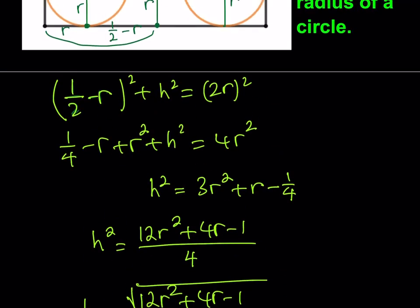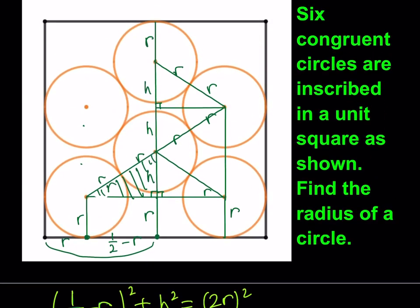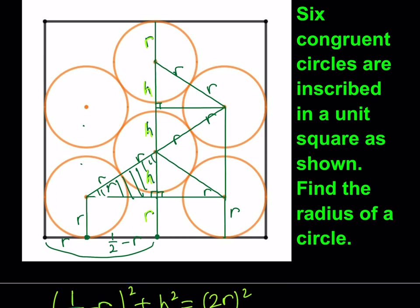How are H and R related in a different way? Well, if you consider the height of the square, which is also a side length, right? We notice that we have R here, we have H here, we have H here, we have H here, and we have R here. So, they all add up to what? They all add up to 1 because this is a unit square.